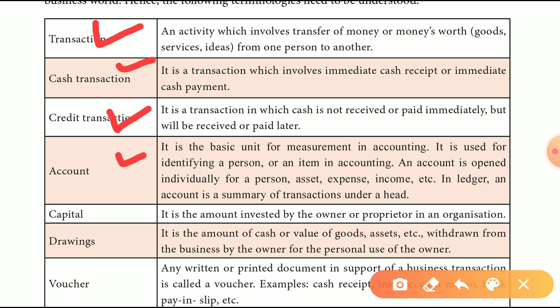So, this account is of three types: individual person account, asset account, expenses account, and income account. So, for example, person account, asset account, expenses account, and income account — these are the main account types.